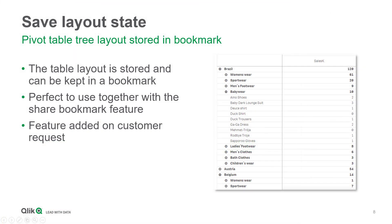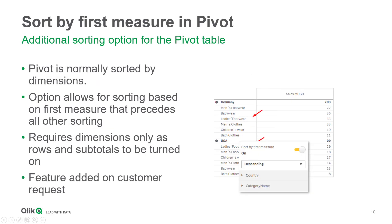We have added some improvements to our pivot table object that will allow you to save the state of the layout, ideal for sharing views of large pivot tables with many nodes. You can also sort by the first measure in the pivot table when needing to sort categories differently.